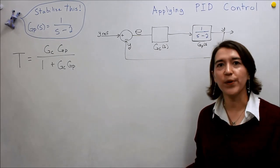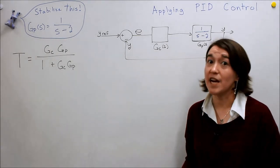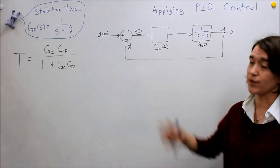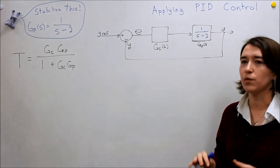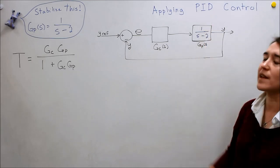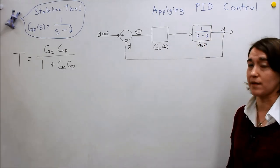Well, how are we going to do that? The system is what it is. We can't really change that. What we can change as designers is the controller. We know that a proportional control did not work. So why don't we just look at PID, proportional integral derivative control, and see if we can apply that to the system and see if we can stabilize it.